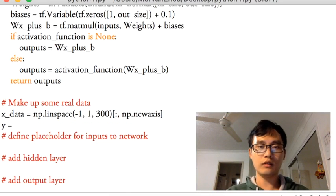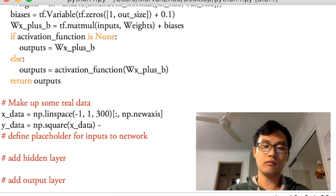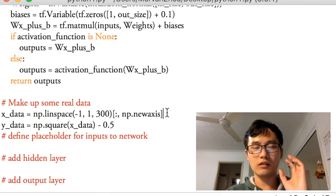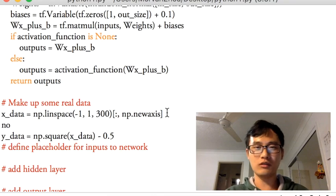So y_data equals numpy.square. I use a square of x_data, and let's minus 0.5, just this one. And to make this data look like real data, we are going to add some noise to this data.